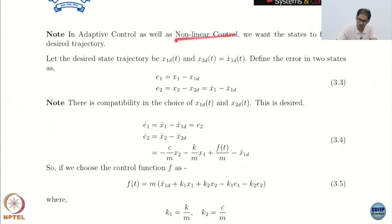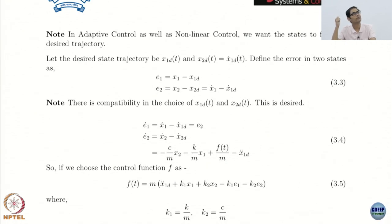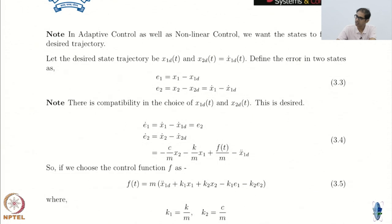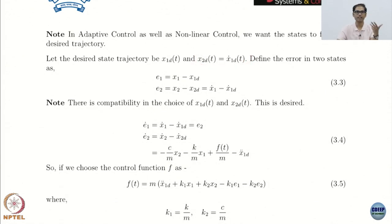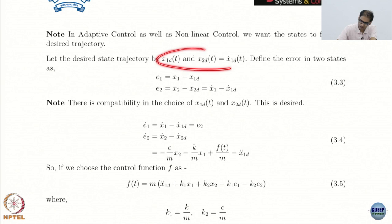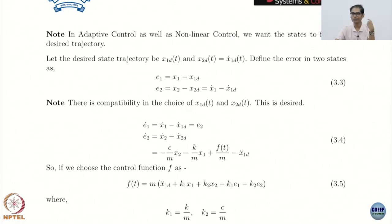Typically in nonlinear control and also in adaptive control, we want the states to follow some desired trajectory. We will see how to do trajectory following. Suppose I want to follow a trajectory for this spring-mass-damper system — a position trajectory and a velocity trajectory. The velocity trajectory has to be the derivative of the position trajectory; otherwise it is not a compatible trajectory. In control, this is called a matching condition.